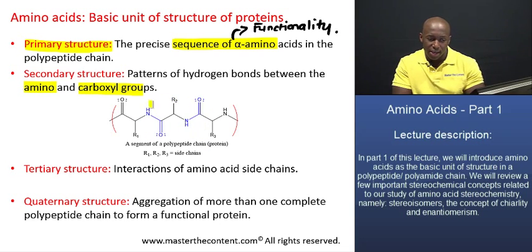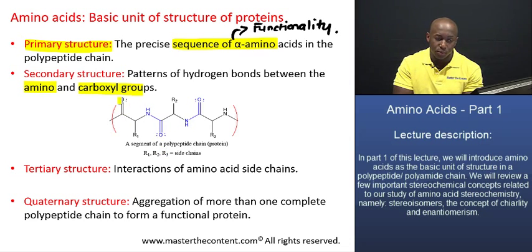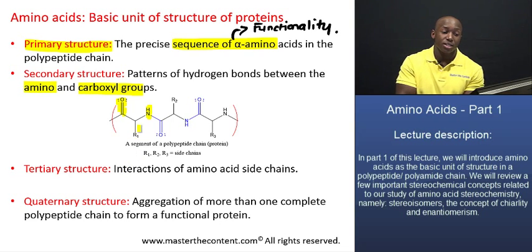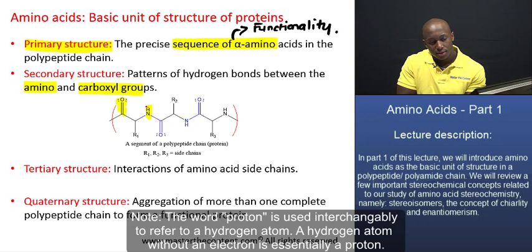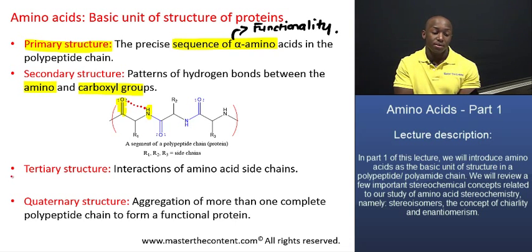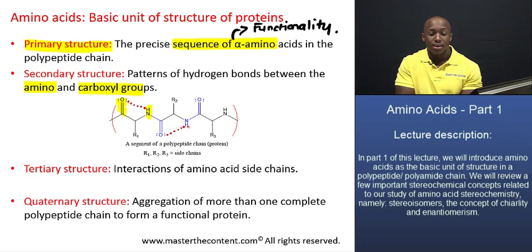I'll direct your attention to the diagram at the center of the screen. In a polypeptide chain, you're going to notice that we have these carbonyl groups here in what we call the backbone of the amino acid chain, and we also have these amino groups bonded to hydrogen. A hydrogen bond can form between this hydrogen atom and that oxygen.